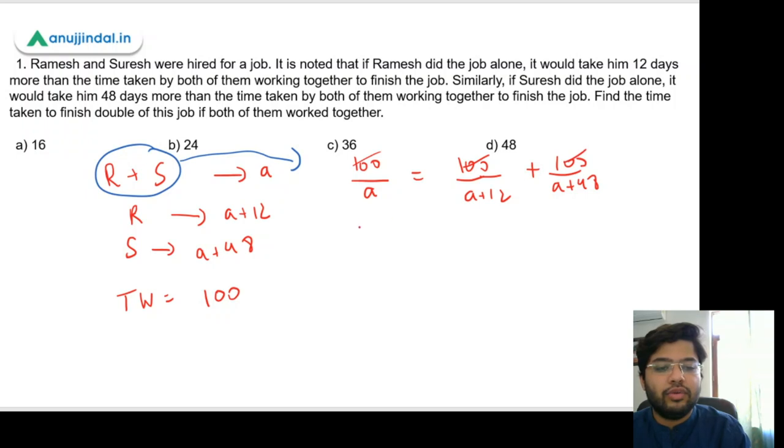So 100 can be cancelled out. What we are left with is 1/a equals 1/(a+12) plus 1/(a+48). Now we can just simply cross multiply this and solve this.